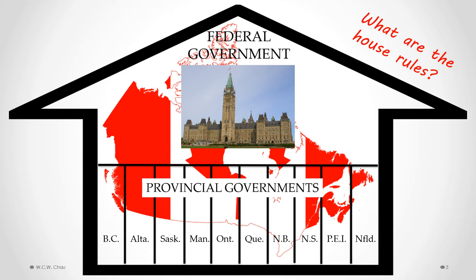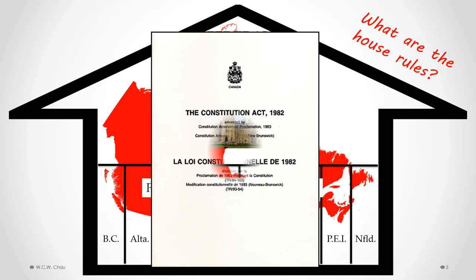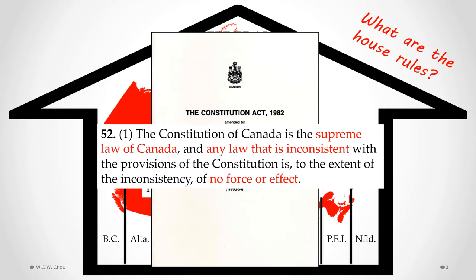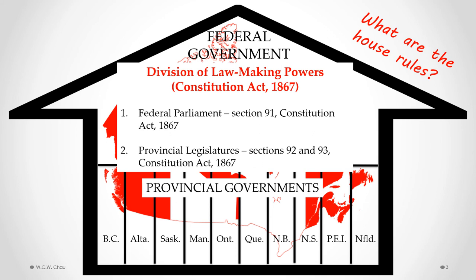The overall general rule is contained in the Constitution Act 1982: the constitution of Canada is the supreme law of Canada, which means that any law passed by any government in Canada has to be consistent with the rules in the constitution. If any law is not consistent with the constitution, that law can be declared invalid — in other words, of no force or effect. The first major set of specific rules is called the division of law-making powers, or division of powers for short.